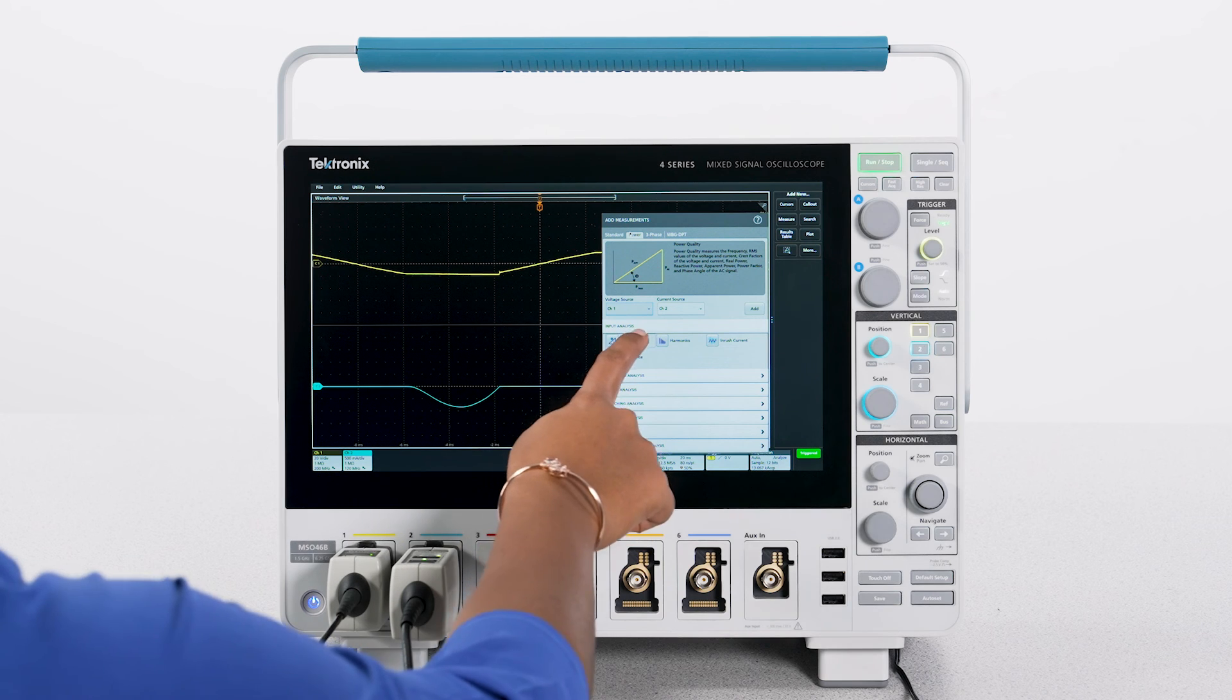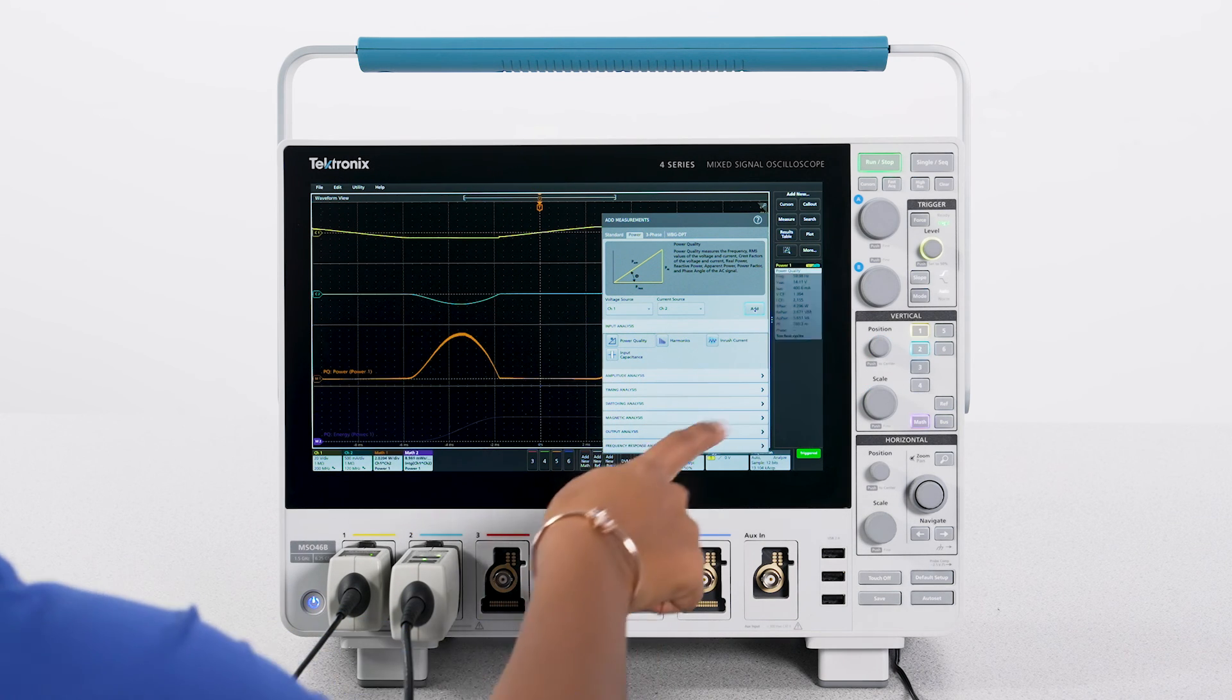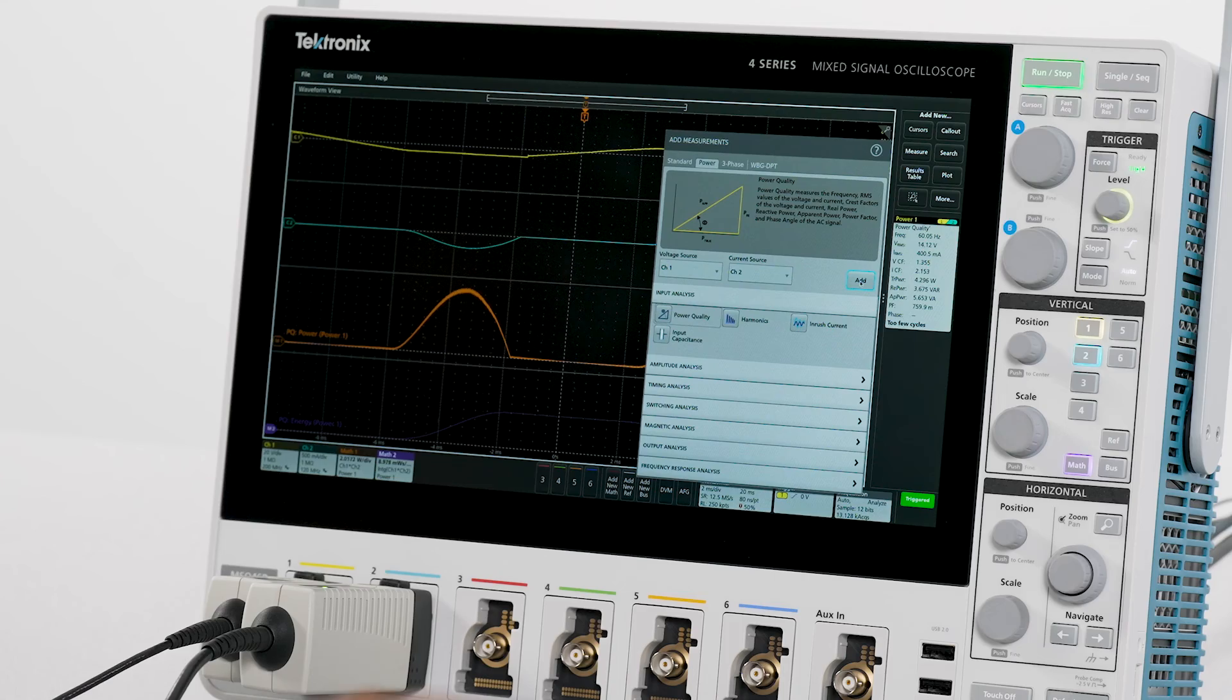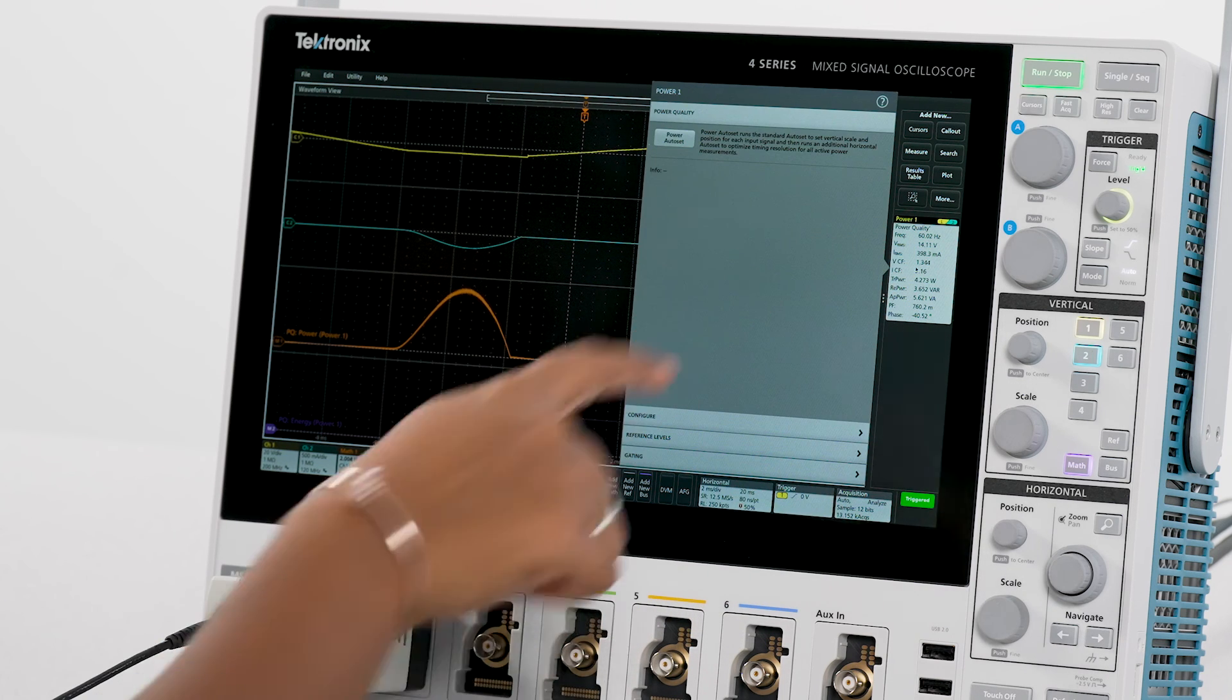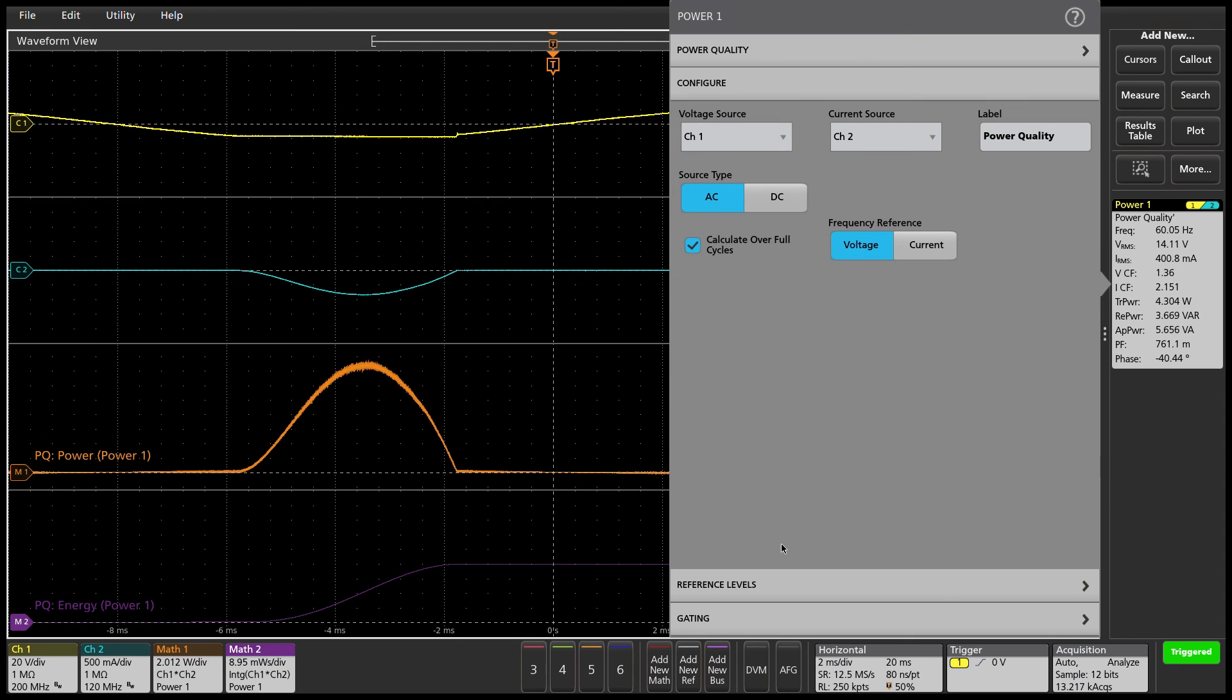I'm going to use the power quality measurement group to make measurements on the input side. These are typically made on AC line inputs but can also be applied to the AC outputs of power inverters.